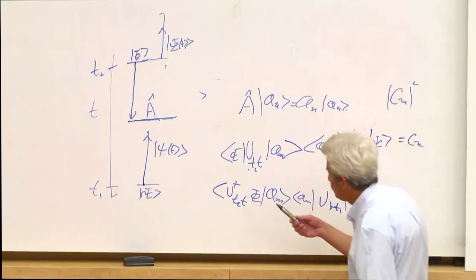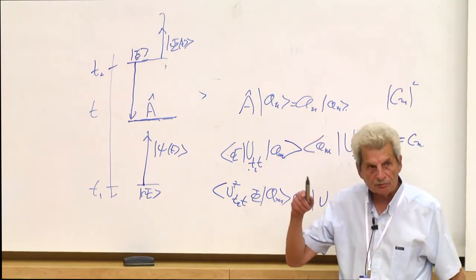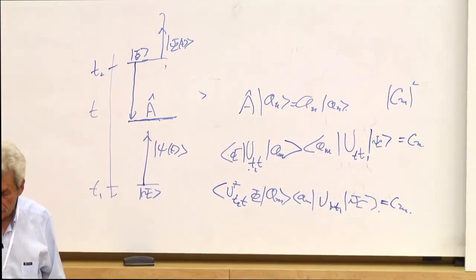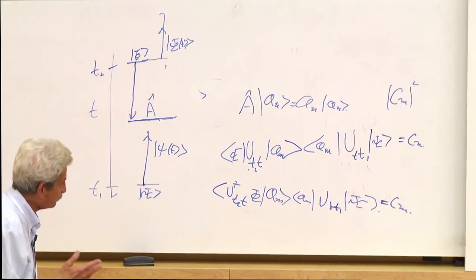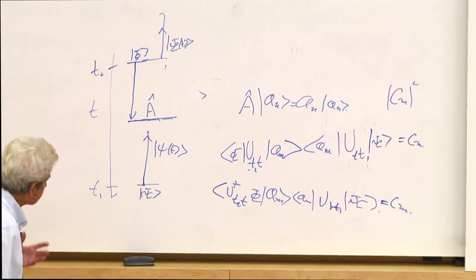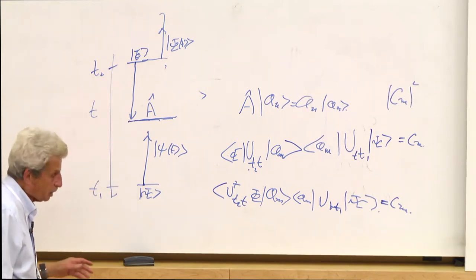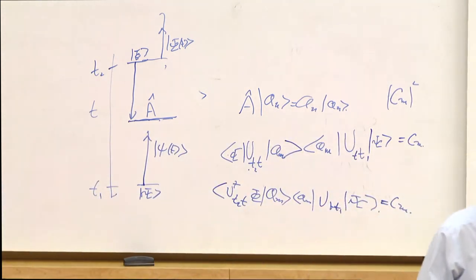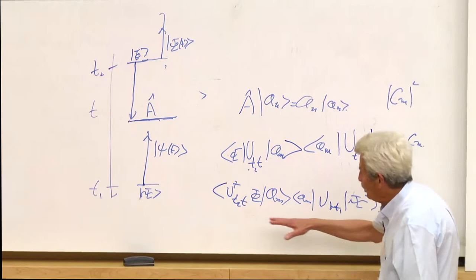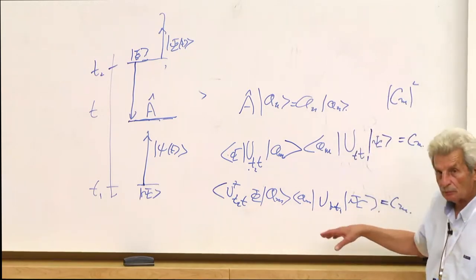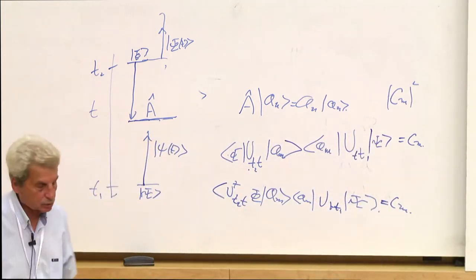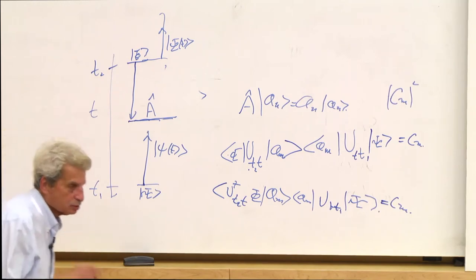By the way, this formula is called the ABL formula — after Aharonov, Bergman, and Lebowitz. It was discovered quite early, about 50-something years ago. I was a new PhD student, and I thought about this idea. I was helped to develop it with Peter Bergman, who was an assistant of Einstein, and George Leibowitz, who worked at the Weizmann Institute when I was there at that time. This formula was resting without any attention for many years until about 25 years ago, when I looked at it again and started to ask new questions.